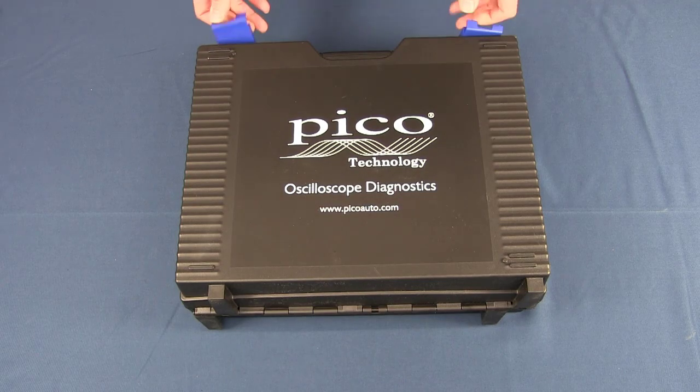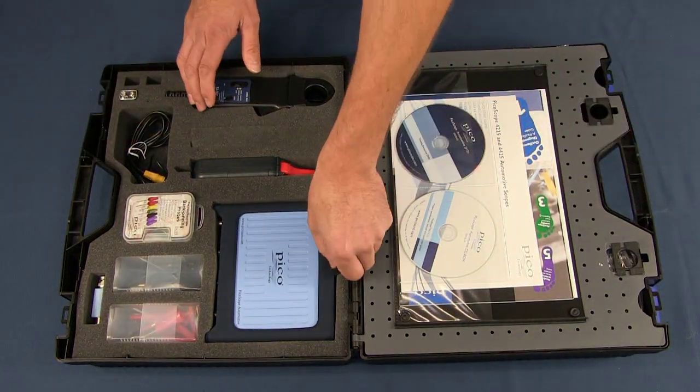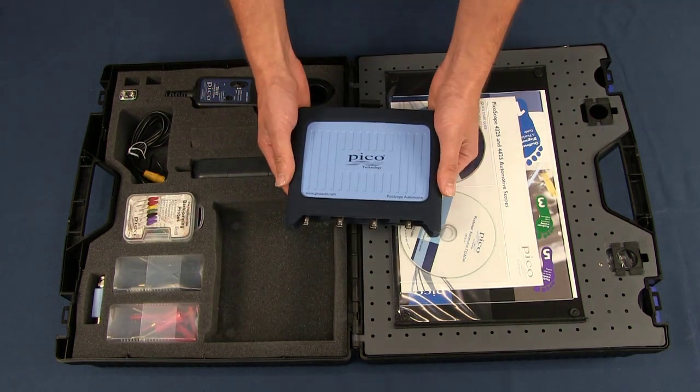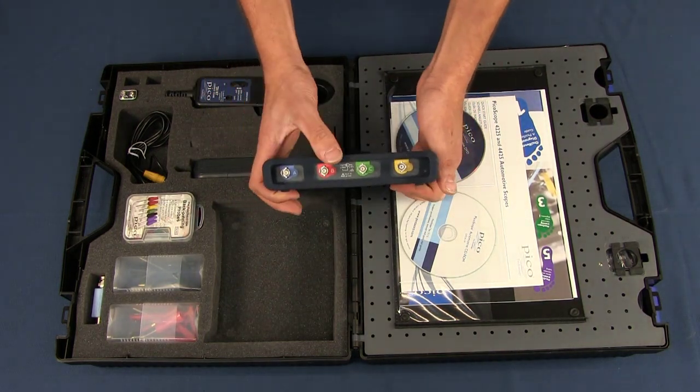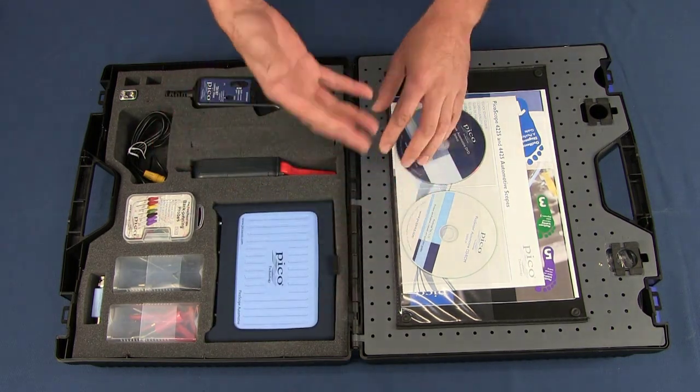So inside the kit, what you're going to get is a 4425 automotive scope. Plus or minus 200 volts on the input, so absolutely fine for testing most diesel injectors especially.